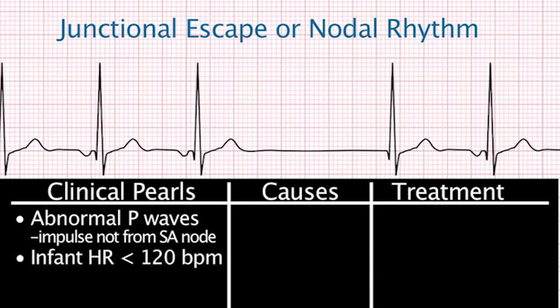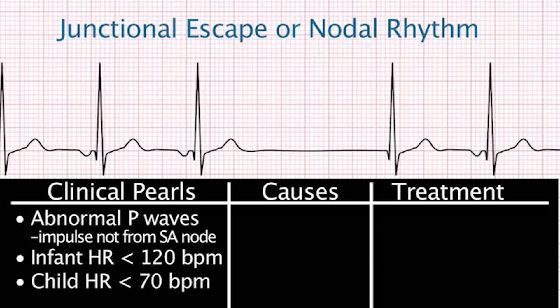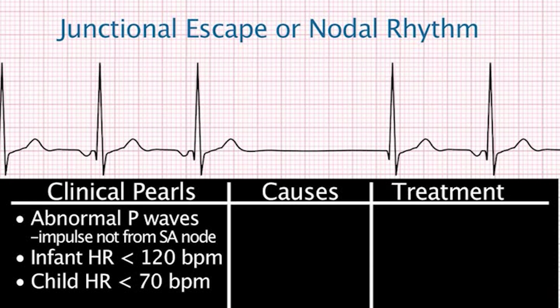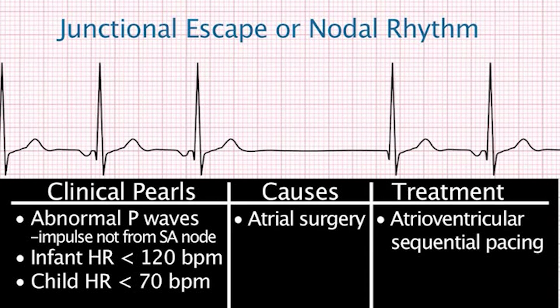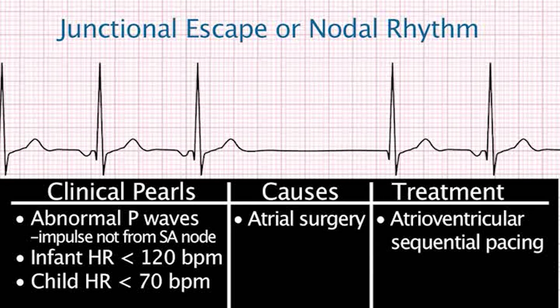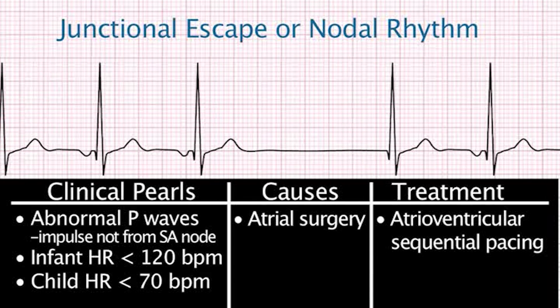The heart rate in the infant is less than 120 beats per minute, and in the child is less than 70 beats per minute. Causes include any surgical procedure involving the atria, and treatment is atrioventricular sequential pacing to restore AV synchrony.